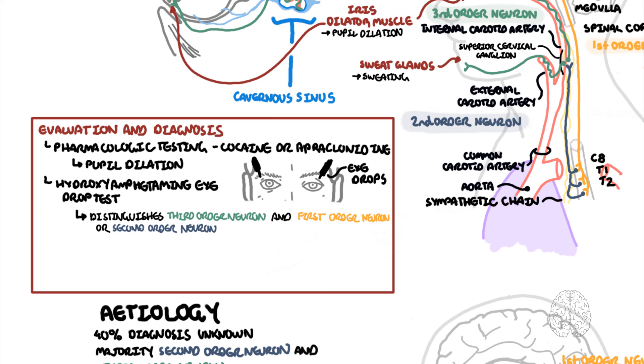Finally, you need to do some imaging. So MRI brain, neck, or CT angiogram can be used to identify any tumors, any carotid artery dissections, or anything else that could be causing this manifestation or lesions along the sympathetic pathway.